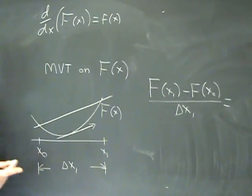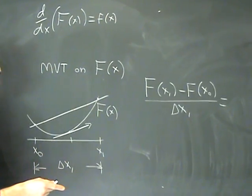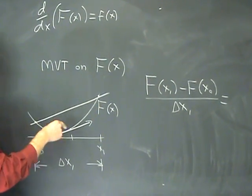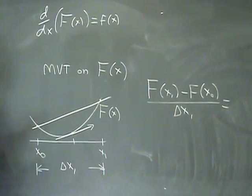The mean value theorem guarantees the existence of some number inside here, such that the derivative of the function at that point is equal to the slope of the secant line that joins the two endpoints.